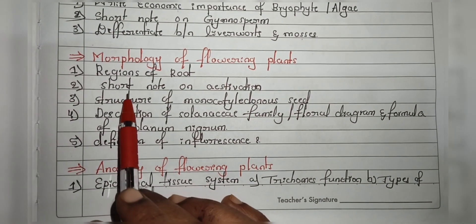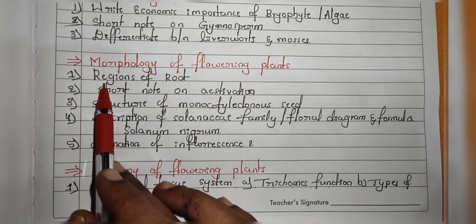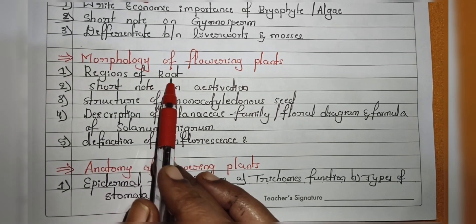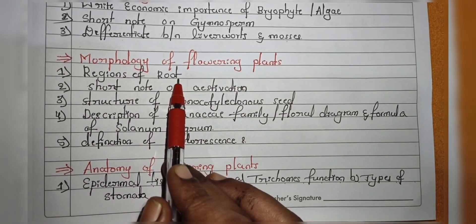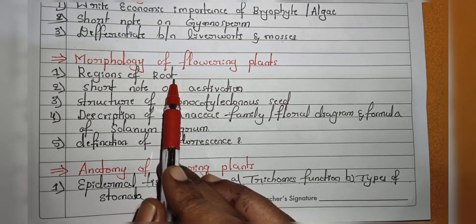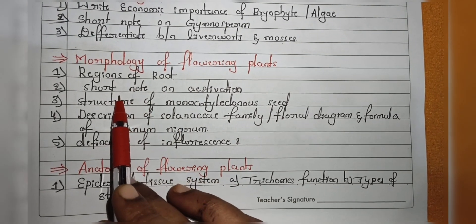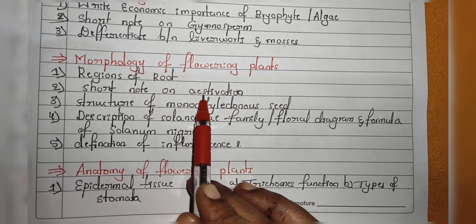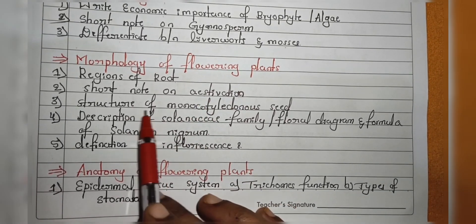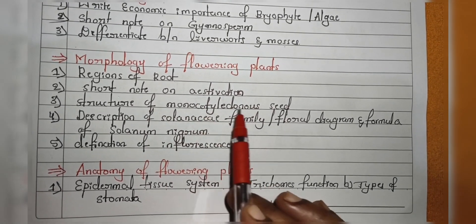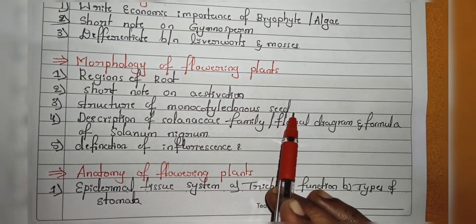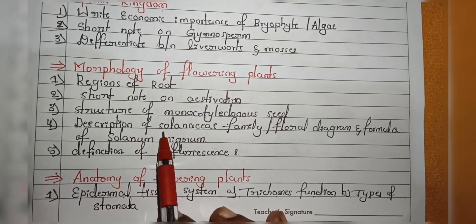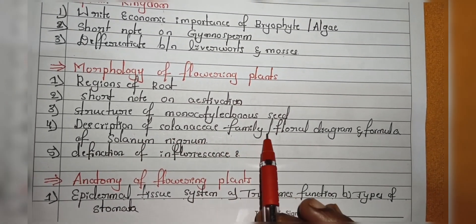Next chapter is Morphology of Flowering Plants. They will ask questions on a few topics. First is the regions of the root — you have to write the regions of the root with a labelled diagram. Next is aestivation — you have to write the types of aestivation in flowers. Next is the monocotyledon seed diagram, which is also very important. Next, they will ask about the description of the Solanaceae family.